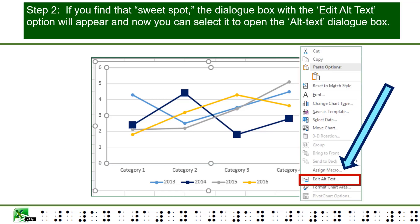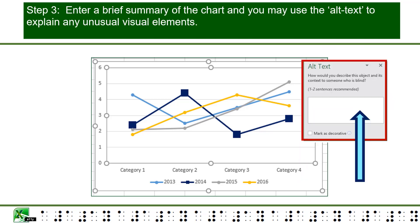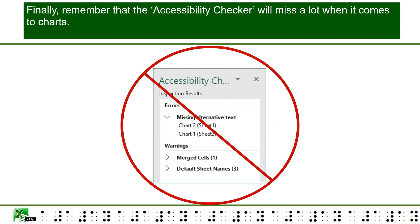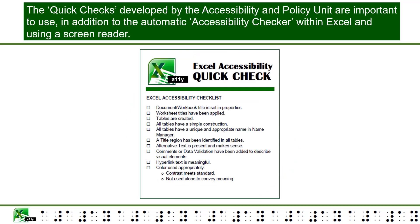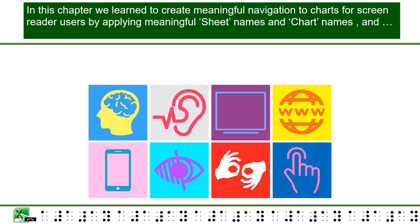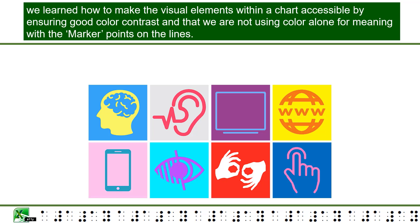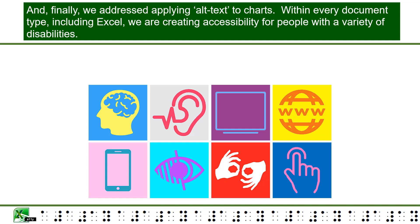Step 2: If you find that sweet spot, the dialog box with the Edit Alt Text option will appear and you can select it to open the alt text dialog box. Step 3: Enter a brief summary of the chart and you may use the alt text to explain any unusual visual elements. Step 4: Remember that the accessibility checker will miss a lot when it comes to charts. The quick checks developed by the Accessibility and Policy Unit are important to use, in addition to the automatic accessibility checker within Excel and using a screen reader. Step 5: In this chapter, we learned to create meaningful navigation to charts by applying meaningful sheet names and chart names, and how to make visual elements within a chart accessible by ensuring good color contrast and not using color alone for meaning with the marker points. And finally, we addressed applying alt text to charts.